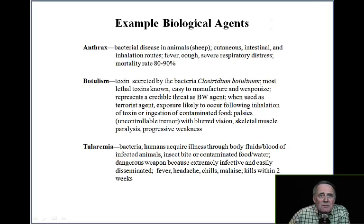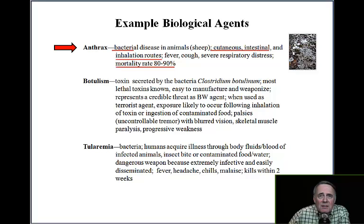Example biological agents include Anthrax. This is a bacterial disease in animals such as sheep. It has cutaneous, intestinal, and inhalation routes. It causes fever and cough, severe respiratory distress, and the mortality rate is 80–90%.